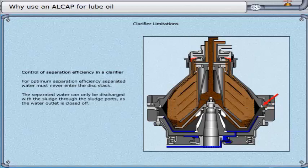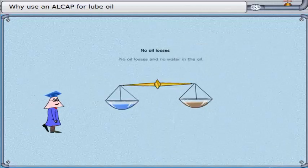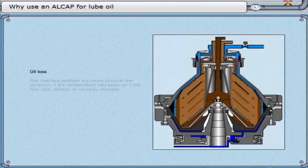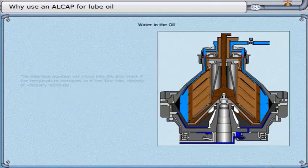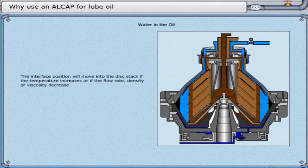The separated water can only be discharged with the sludge through the sludge ports, as the water outlet is closed off — resulting in no oil losses and no water in the oil. The interface position will move towards the periphery if the temperature decreases, or if the flow rate, density, or viscosity increase. Should the interface reach the outside of the top disc, a broken water seal will occur with consequent oil loss. The interface position will move into the disk stack if the temperature increases, or if the flow rate, density, or viscosity decrease. Should the interface enter the disk stack, water will escape with the cleaned oil into the oil outlet.